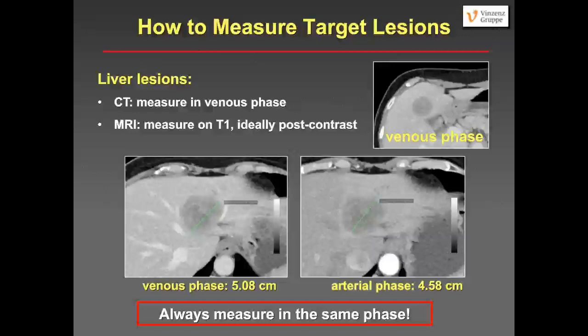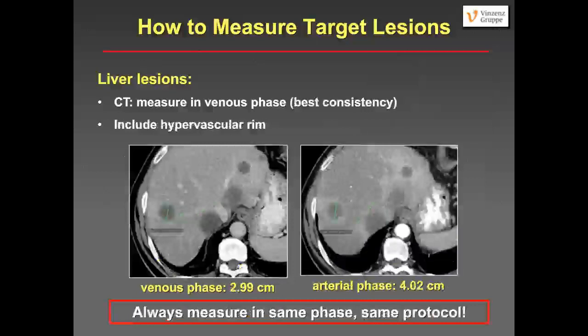For example, in the venous phase a target lesion in segment eight measures three centimeters including the small hypervascular rim. But in the arterial phase the hypervascular rim is much thicker, making that lesion four centimeters — a 30% difference between venous and arterial phase. It is really crucial to measure always in the same phase and use the same protocol for baseline and follow-up scans to get consistent measurements.